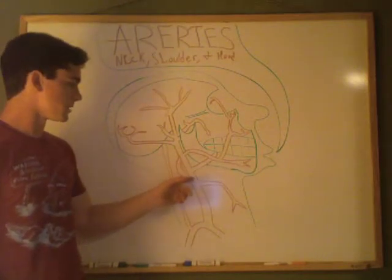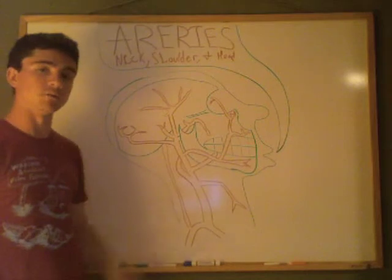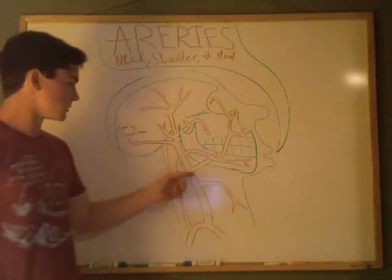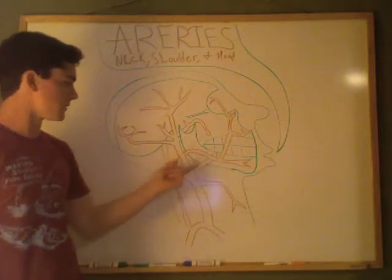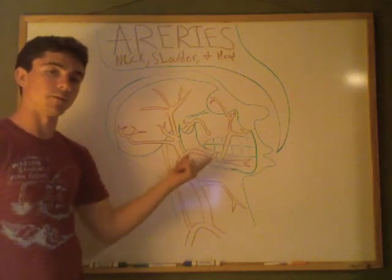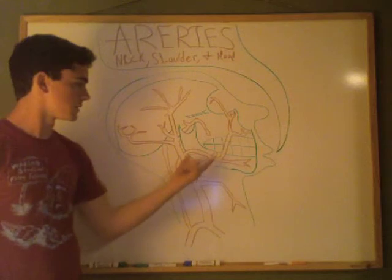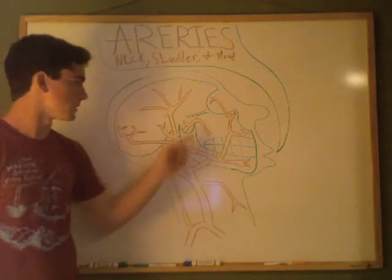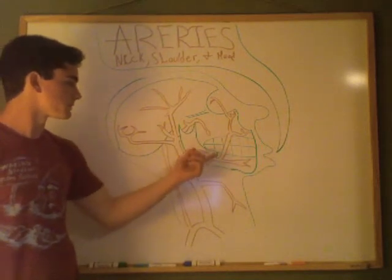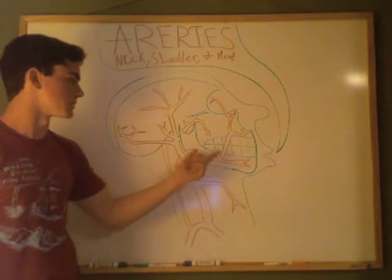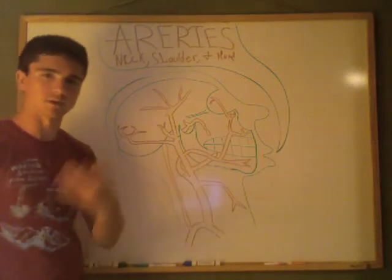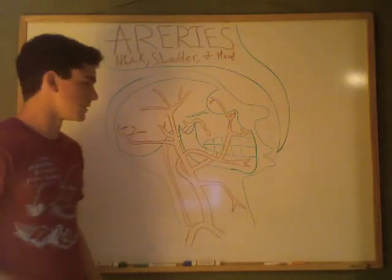The external artery is going to come up and branch into the lingual artery, just like the lingual vein did previously. The lingual artery is going to provide oxygenated blood towards the bottom of the mouth — a good portion of the mouth, but not all of it. We'll talk about some more of the upper mouth in a bit. The lingual artery runs inside the mandible — it looks like it's running outside, but it's actually on the inside, more medial.